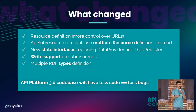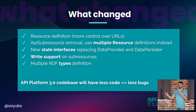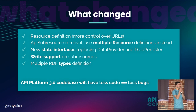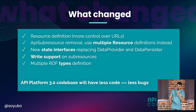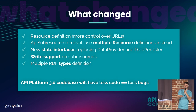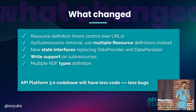So, what changed? We have way more control over resources, over the URLs we are defining with this URI template and URI variables. API sub-resources will be removed and you will use multiple resource definitions instead. We have new interfaces for providers and persisters.